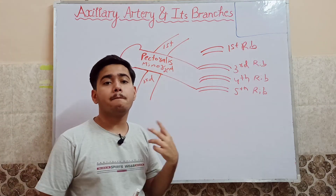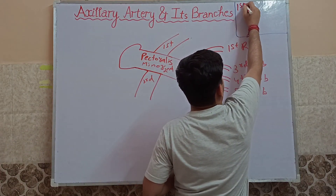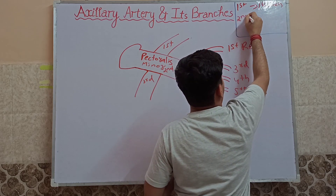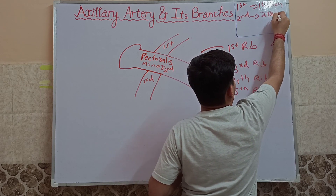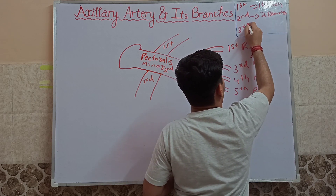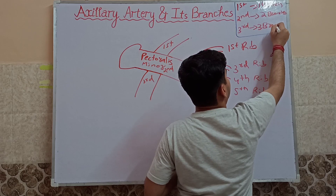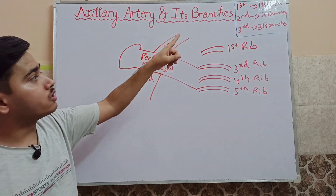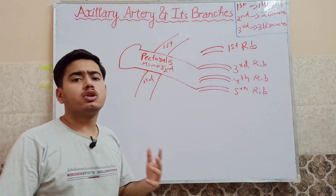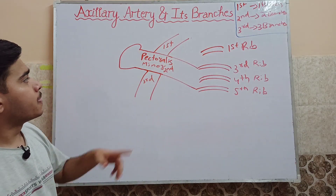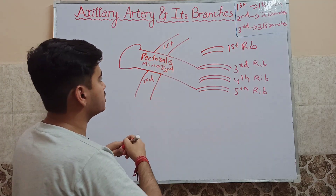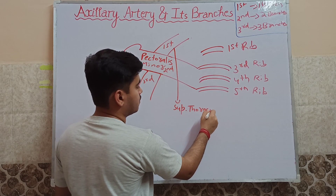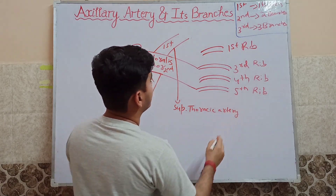From these three parts we will get our branches. The first part gives us one branch, the second part gives us two branches, and the third part gives us three branches. The first part gives us one branch — that is the superior thoracic artery.